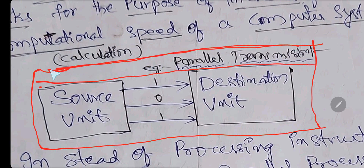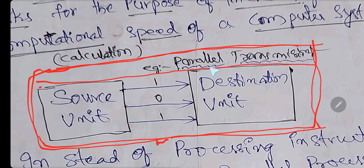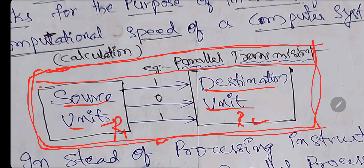While drawing in the exam, draw border lines and write the title above the diagram - you will get good marks. These are writing tips. Now, this is the diagram for parallel transmission. Source unit to destination unit - whether R1 to R2, CPU to RAM, or one device to another - three lines are connected, so bits 1, 0, 1 travel at the same time. That is parallel transmission, and it is very fast. Use parallel processing when you need very fast transmission; use serial when you need lower cost.